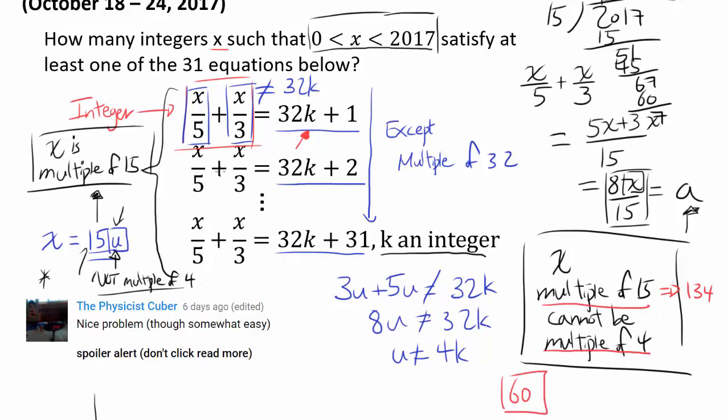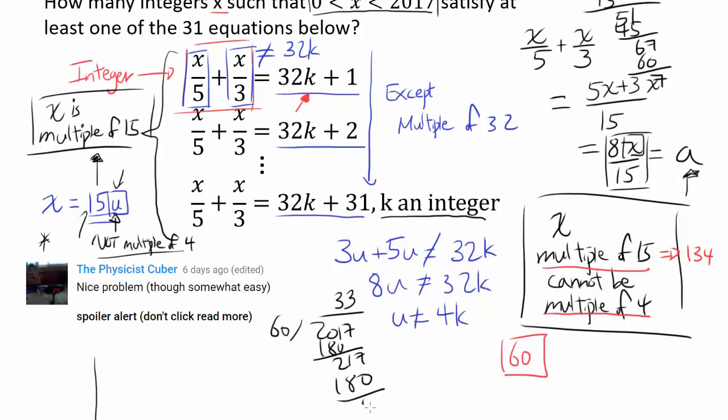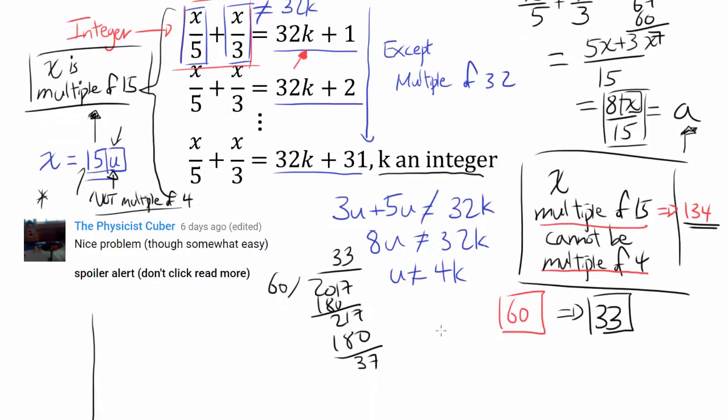So dividing 2017 by 60 gets us 3, 180, 2, 17, 3, 180, and 57, not 57, 37, my bad. And that's telling you there's 33 multiples of 60 or 33 numbers we have to take away from 134.